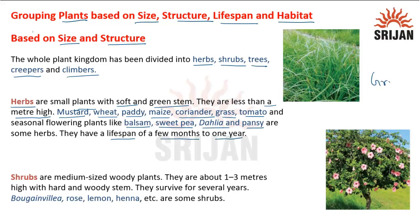This is grass, and this is basically an herb. Shrubs are medium-sized woody plants. They are about 1 to 3 meters high and have a hard and woody stem. They survive for several years. Rose, lemon, henna, etc. are some examples. This is basically china rose, and this is a shrub.